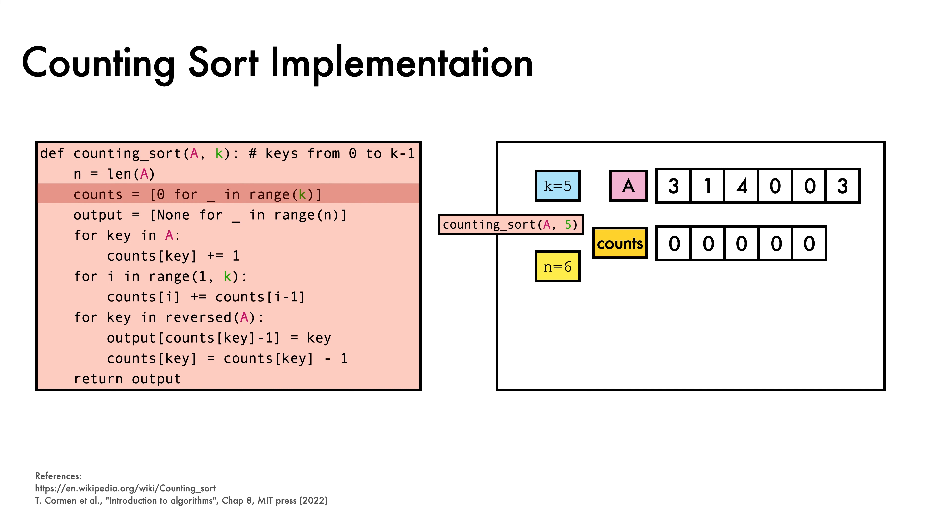For illustrative purposes, we'll also write the key that corresponds to each count beneath it, though we don't actually store this lower array, since we can simply use the indices of the counts array. Next, we construct an empty output array to hold the results of the sort.